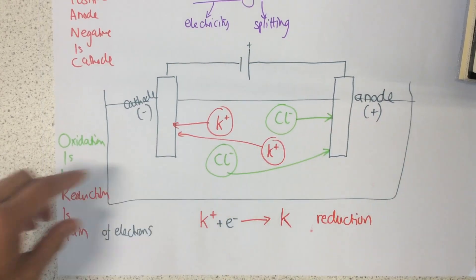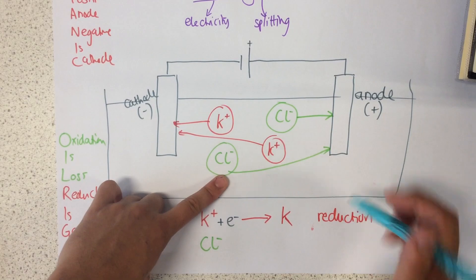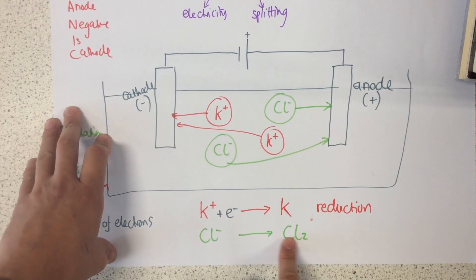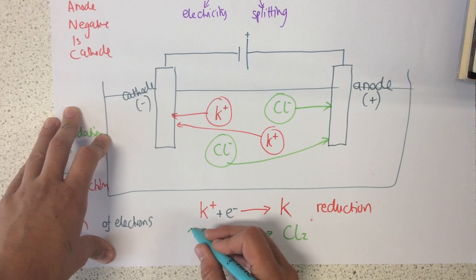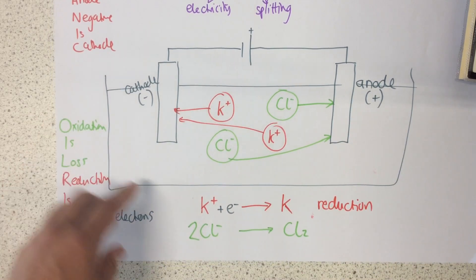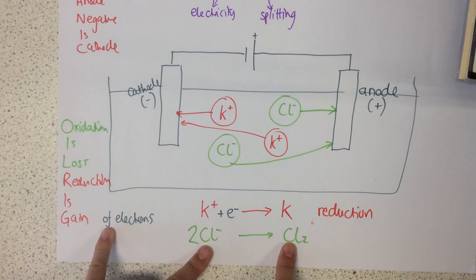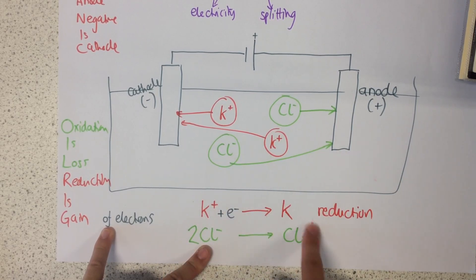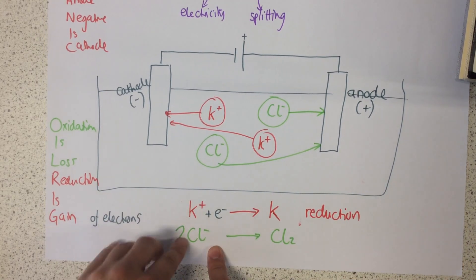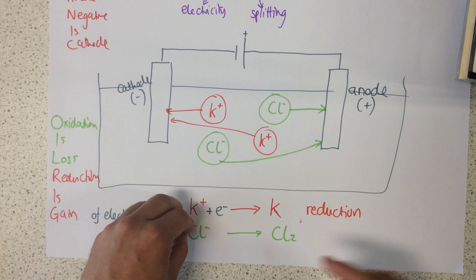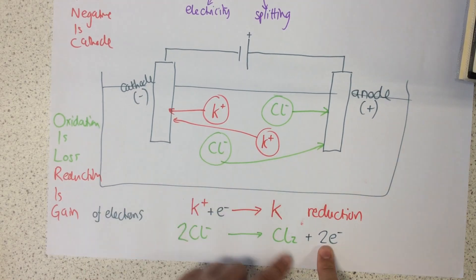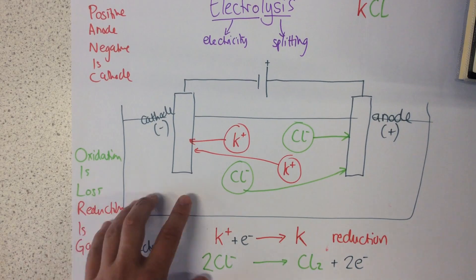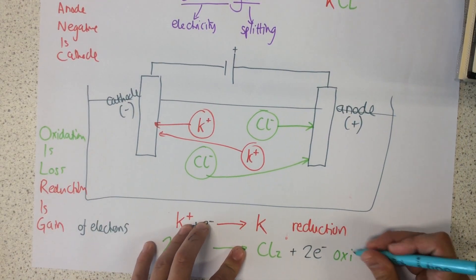At the anode, we start with chloride ions and produce chlorine gas. Chlorine gas has the formula Cl2, so we need to put a 2 in front of the chloride ions to balance. Because the chloride ion is negative, it needs to lose electrons to become neutral chlorine gas. So we show that the chloride ions produce chlorine gas plus two electrons that have been lost. Because electrons are lost, this process is oxidation.